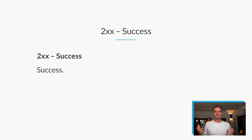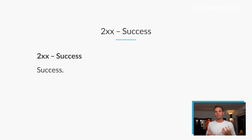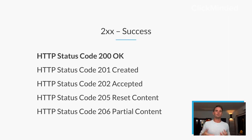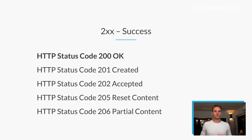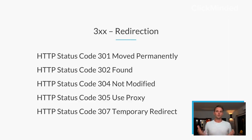200 block requests — these are successful requests. Usually you're going to see status code 200 the most. There are a couple of others — Created, Accepted, Reset, or Partial — but in general, a 200 request is great. That means everything happened as planned, and that's usually what you're going for.